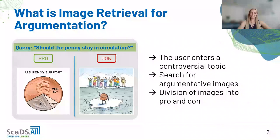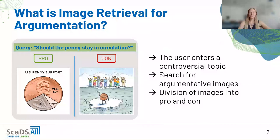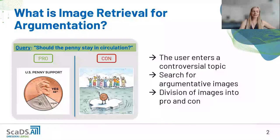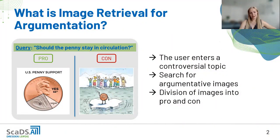Let's start with a quick definition for image retrieval for argumentation. The user enters a controversial topic as a query, and then the system searches for argumentative images that fit this query, and divides the images into pro and con. For example, the query 'should the penny stay in circulation' has a pro-side diagram showing how many US citizens support the penny, and a con-side cartoon of people waving goodbye to the penny.